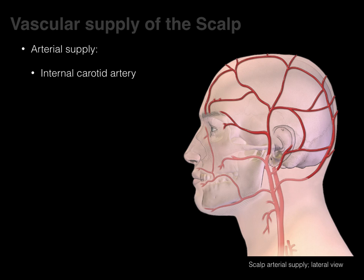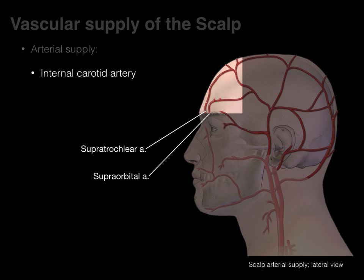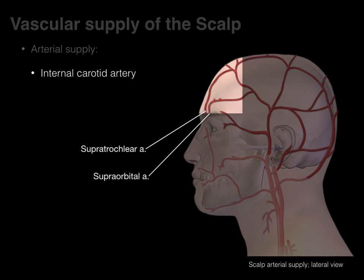From the internal carotid artery: it courses through the carotid canal and the cavernous sinus, then gives rise to ophthalmic branches that in turn give rise to the supraorbital and supratrochlear arteries, which supply the front of the scalp.